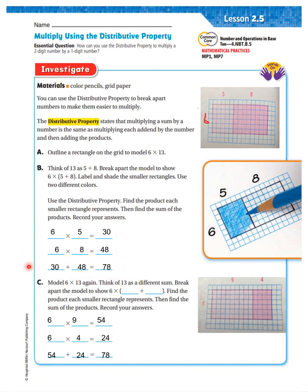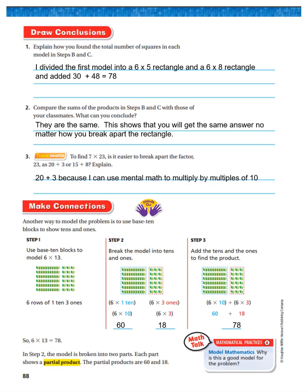Now, model 6 times 13, but this time we're going to use two different numbers to add to 13. I'm going to use 9 and 4. So 6 times 9 is 54, 6 times 4 is 24, and 54 plus 24 is 78.